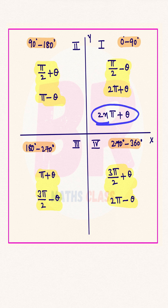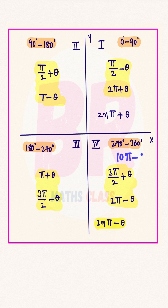Even number times pi minus theta — where 2n refers to an even number — lies in the fourth quadrant. If someone asks you which quadrant 10 pi minus theta lies in, you identify that this is an even number times pi minus theta, so it lies in the fourth quadrant.